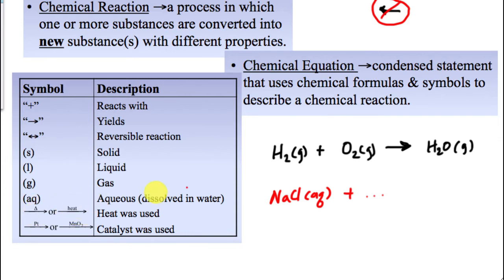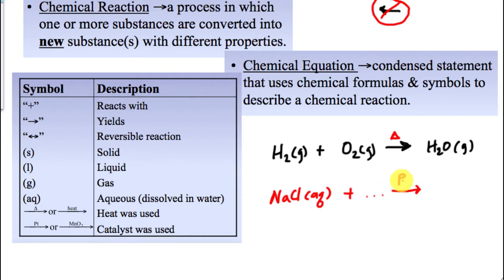We sometimes put notations above the arrow. If heat is required for the reaction, you can write the word 'heat' or use a little triangle symbol. For catalysts — which speed up chemical reactions — the catalyst isn't a reactant or a product, so we write the substance used as a catalyst above the arrow. Platinum is a very common catalyst; it's not consumed in the reaction, just a vehicle to make things go faster.